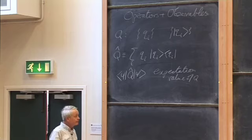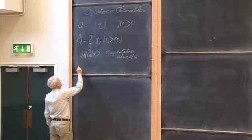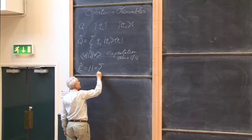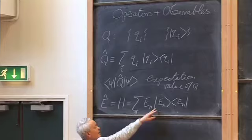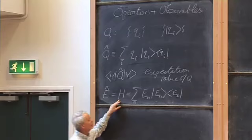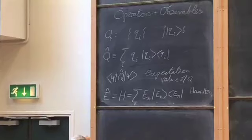Energy is the physical thing, and it comes with an operator which would be called E-hat. For historical reasons it is called H, and it is the operator: the sum over all possible energies of the energy eigenvalue times the outer product of the energy eigenstate with itself. These are the states of well-defined energy, these are the corresponding energies, and this is the Hamiltonian — named in honor of the Irish mathematician who introduced it into classical physics.